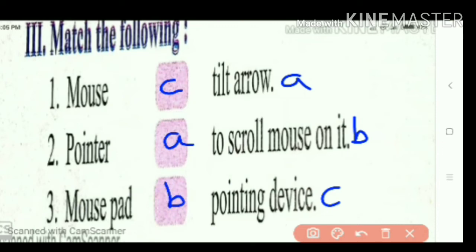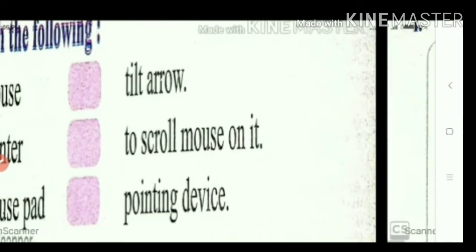So mouse is C. Pointer is A, that is tilt arrow. Mouse pad is B, to scroll mouse on it. Take this screenshot. Here you can see the numbers. Now one activity question is there.